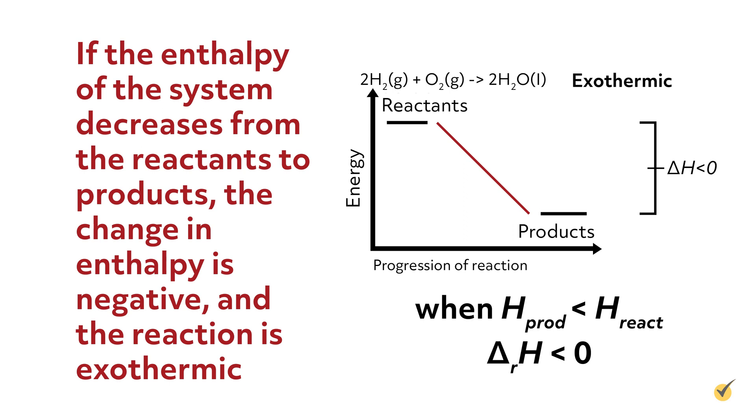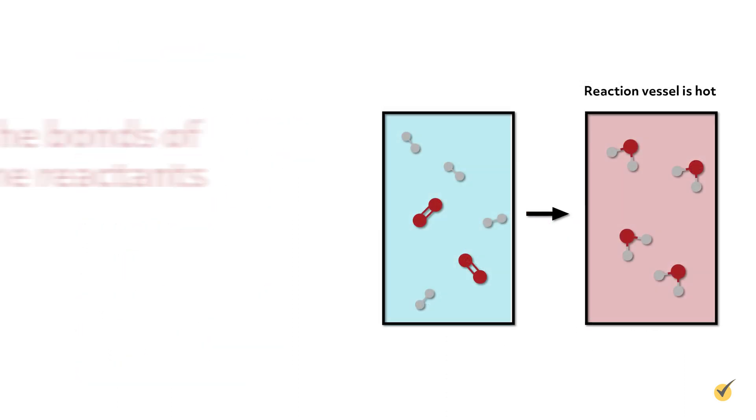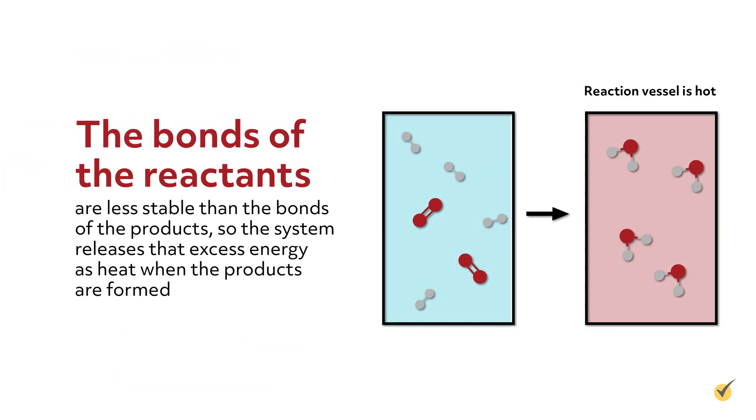Conversely, if the enthalpy of the system decreases from the reactants to products, the change in enthalpy is negative and the reaction is exothermic. The bonds of the reactants are less stable than the bonds of the products, so the system releases that excess energy as heat when the products are formed. In this case, the reaction vessel would feel hot to the touch.